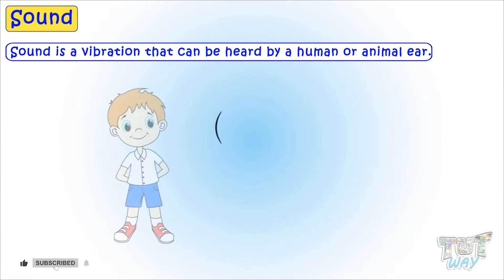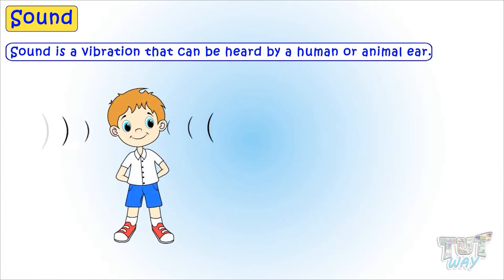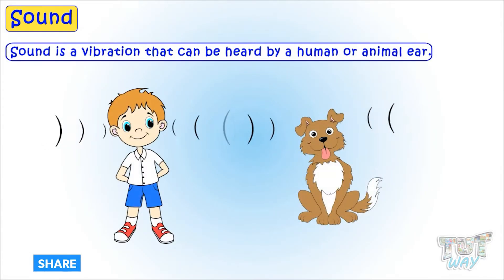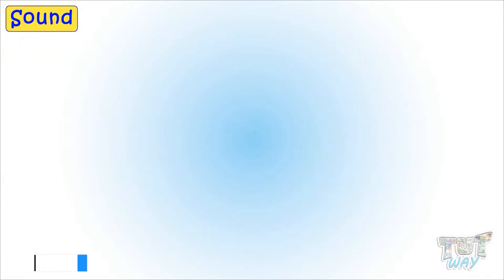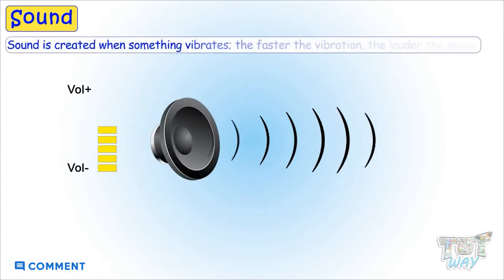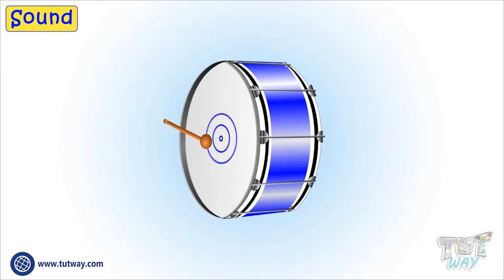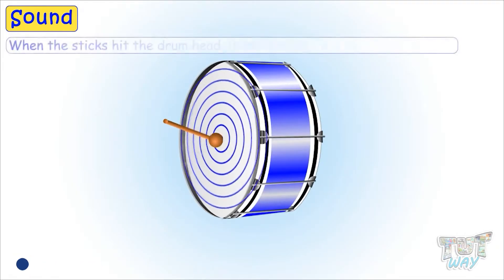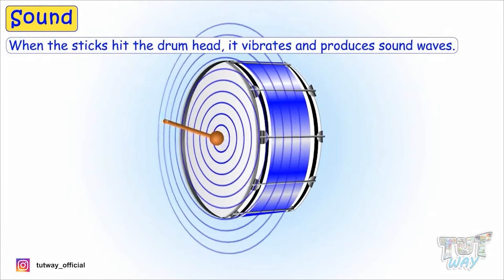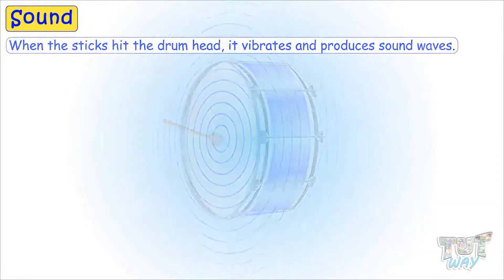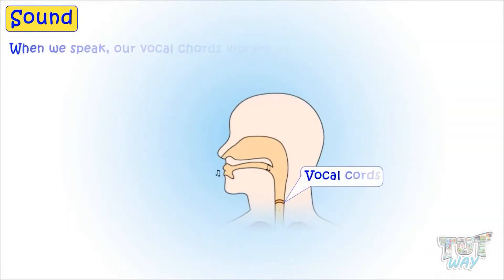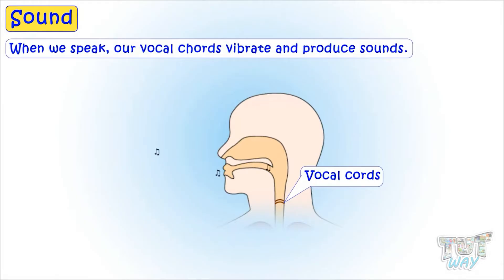Sound is a vibration that can be heard by a human or animal ear. Sound is created when something vibrates, and the faster the vibration, the louder the sound. Like when sticks hit the drum head, the drum head vibrates and produces sound waves. Even when we speak, our vocal cords vibrate, because of which sound is produced.